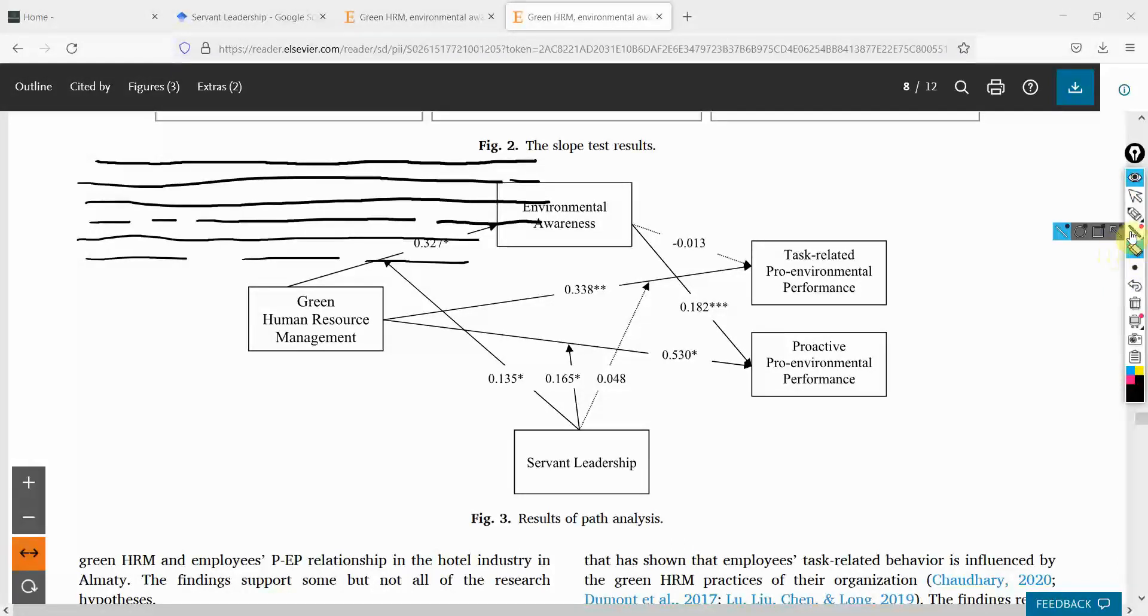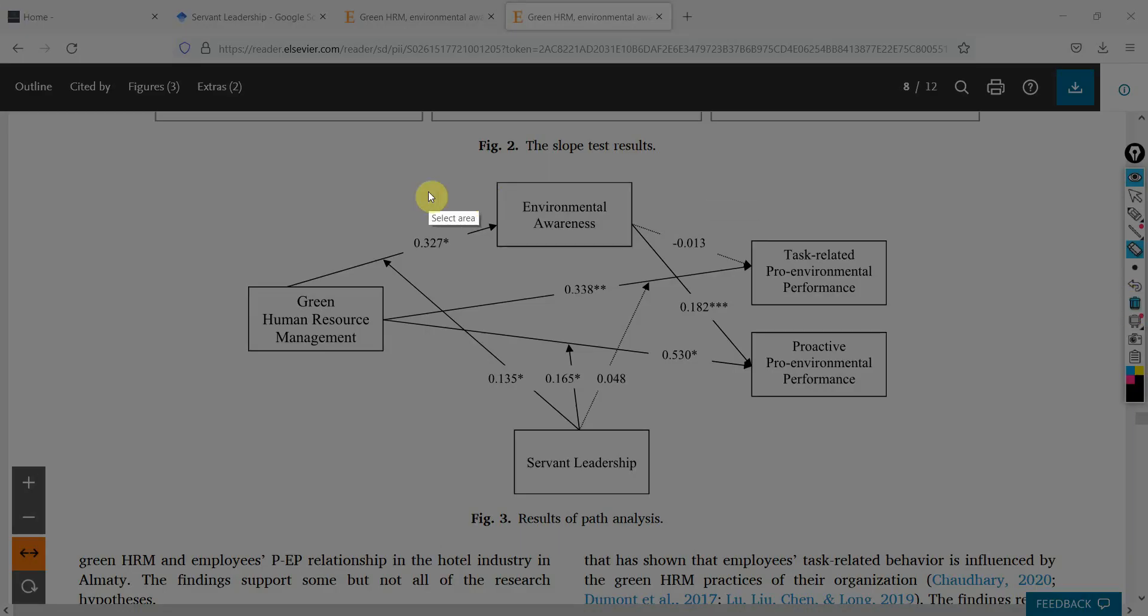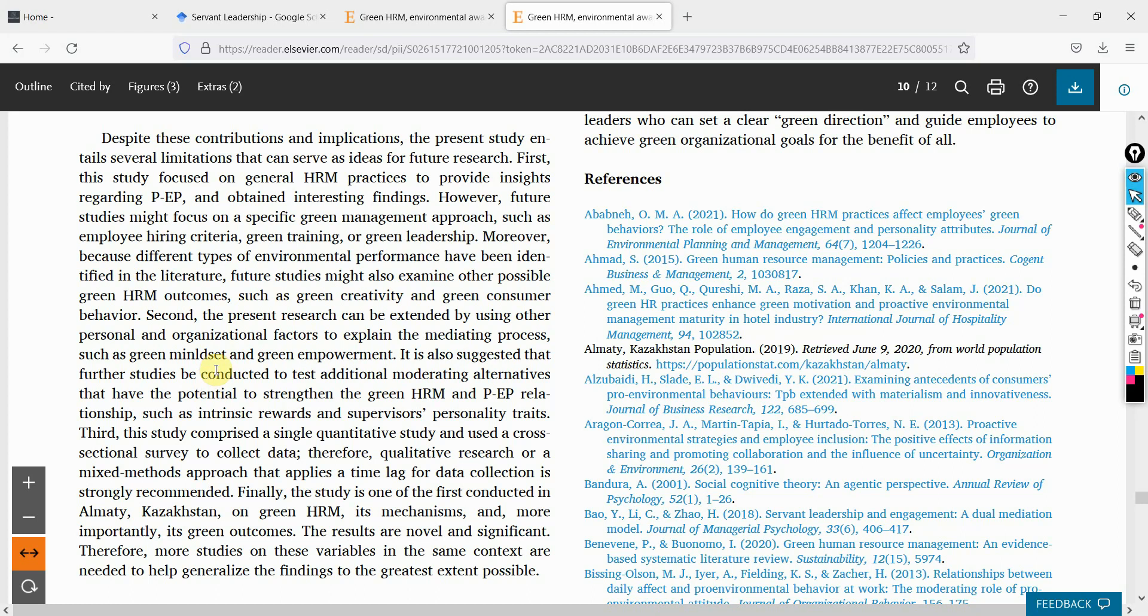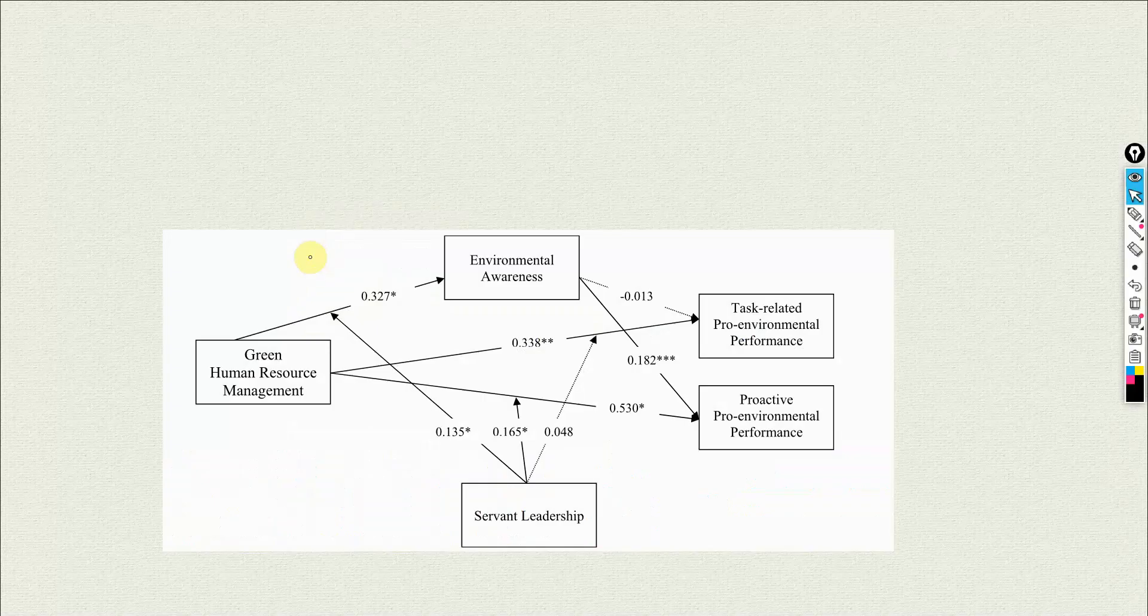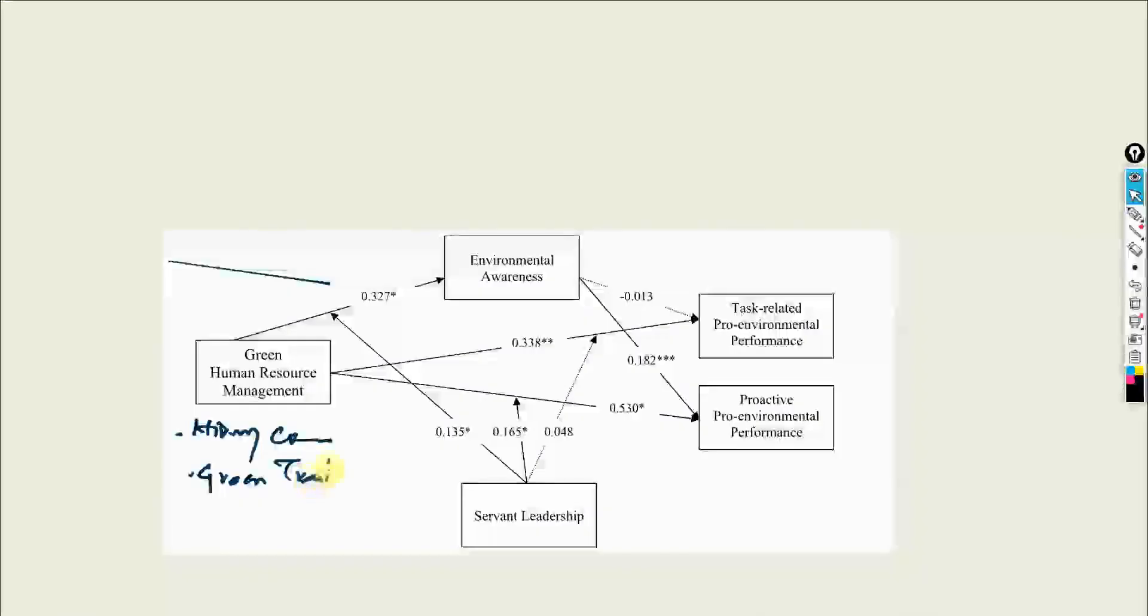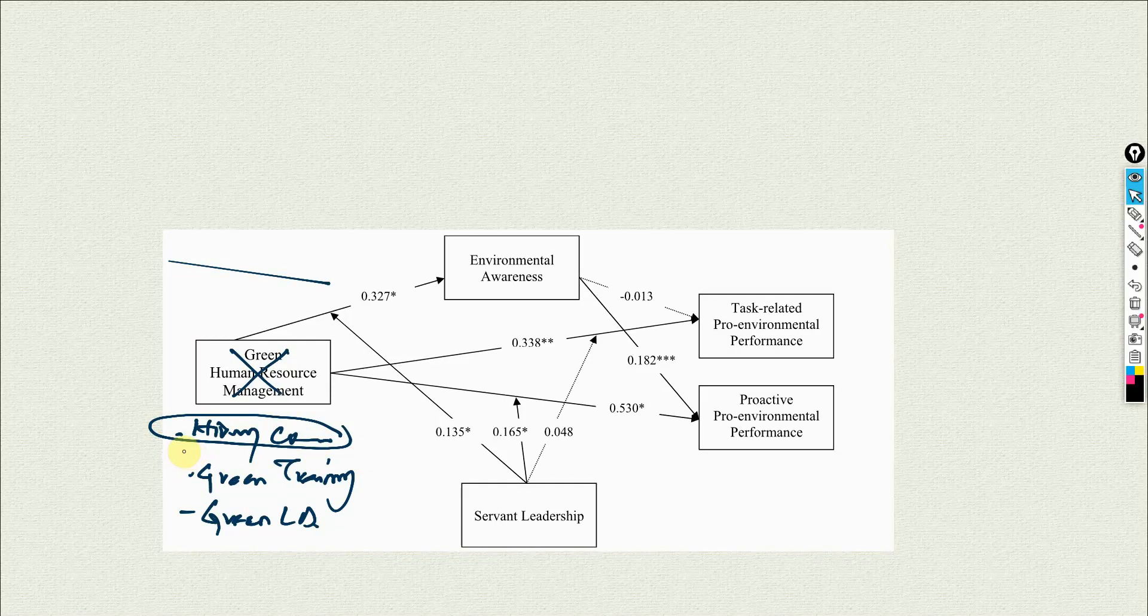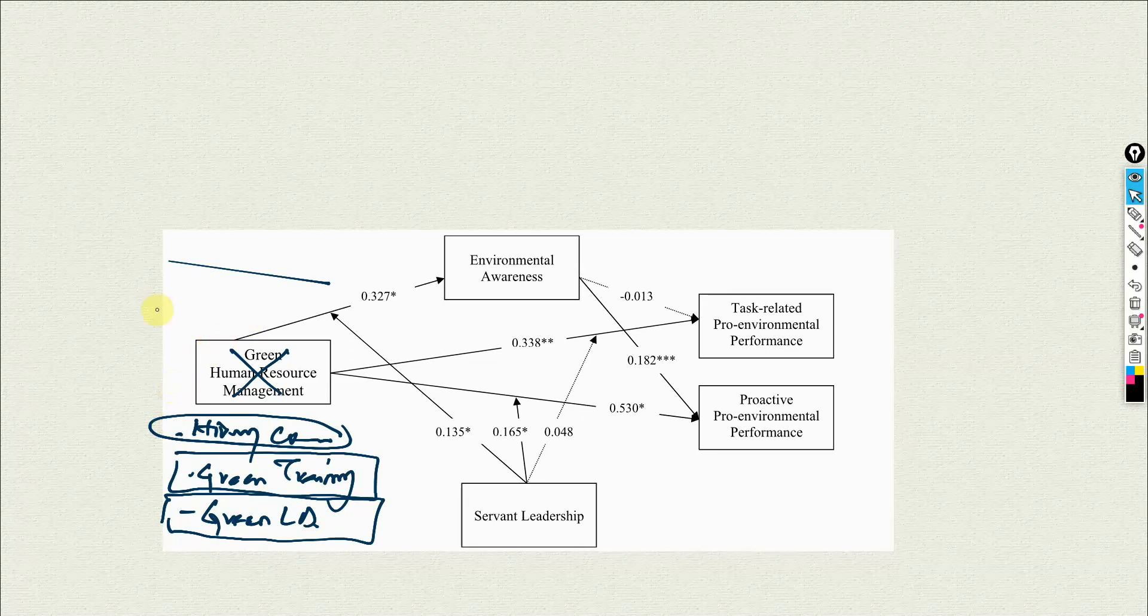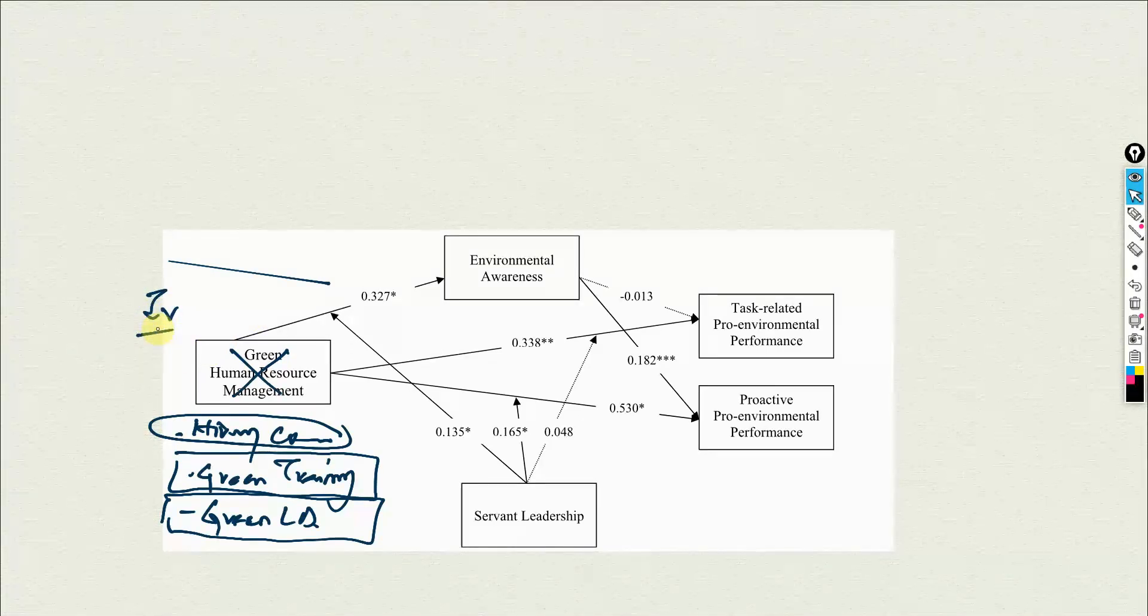So I'm going to copy this model here just for the sake of better understanding. So the three recommended variables are hiring criteria, green training, and green leadership. Now this needs to be removed. Obviously they have recommended to have specific HR practices, so these are the specific HR practices that one can take into account. So step one, now you have added new independent variables.